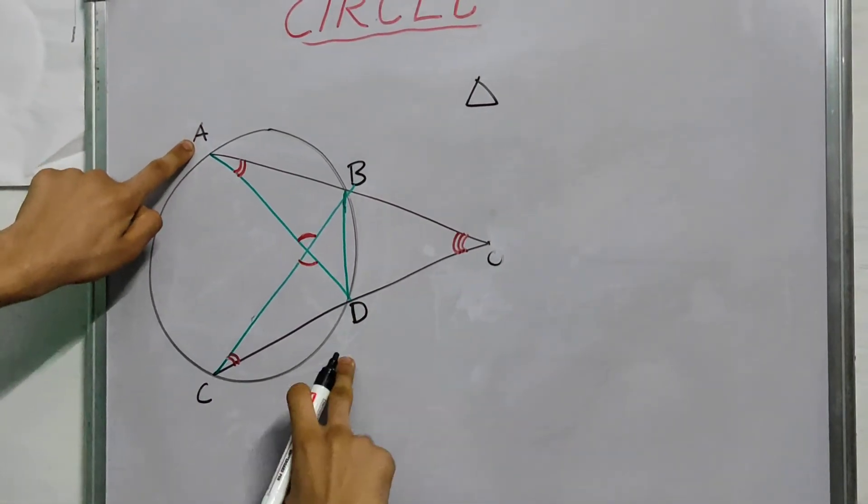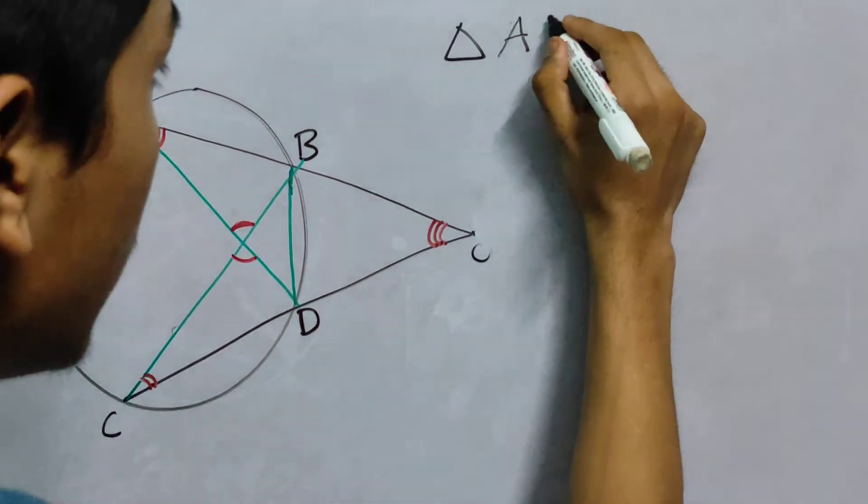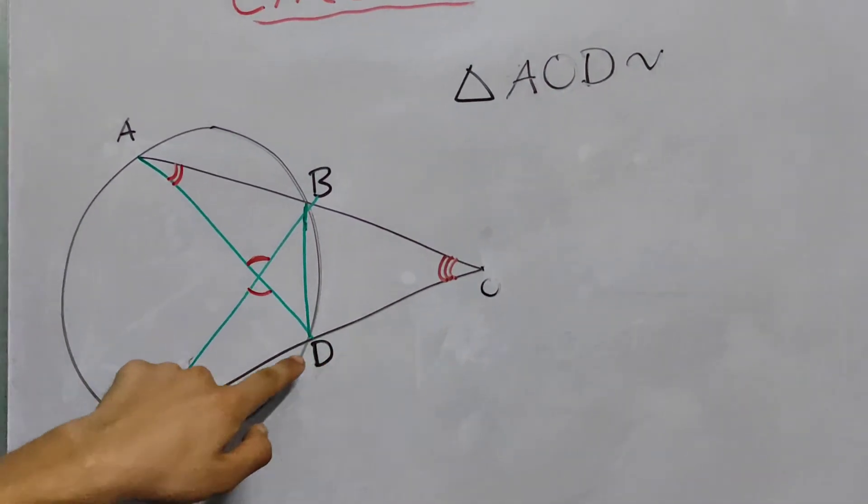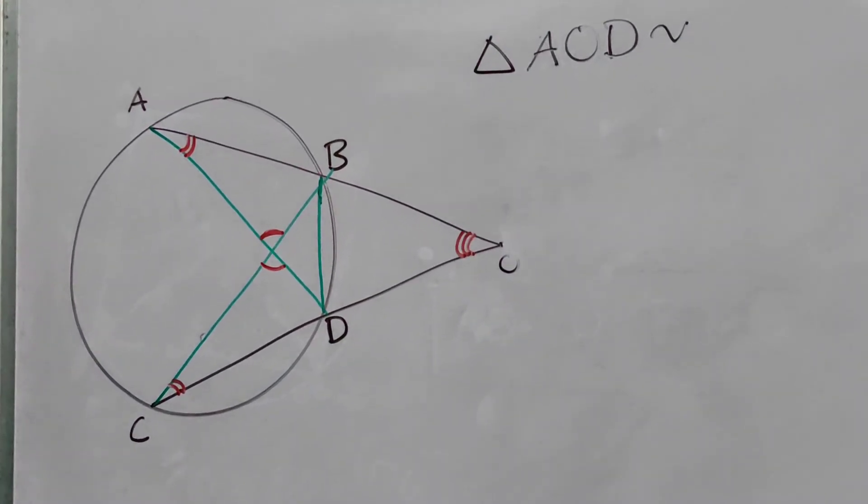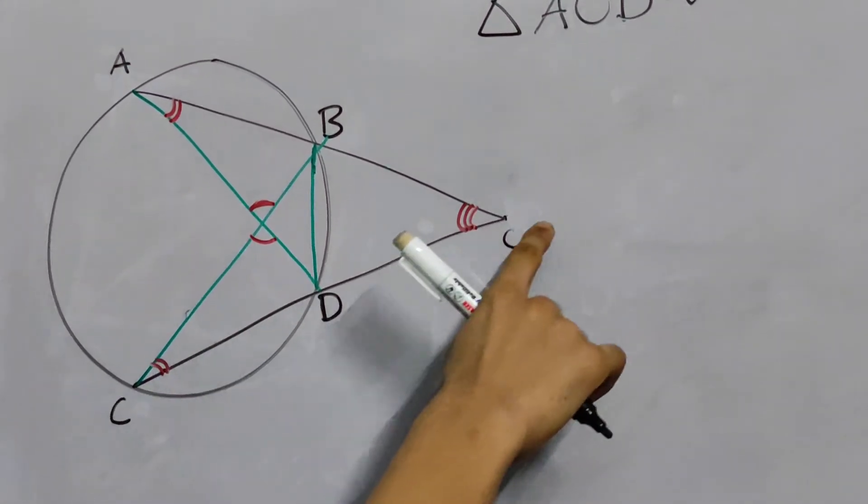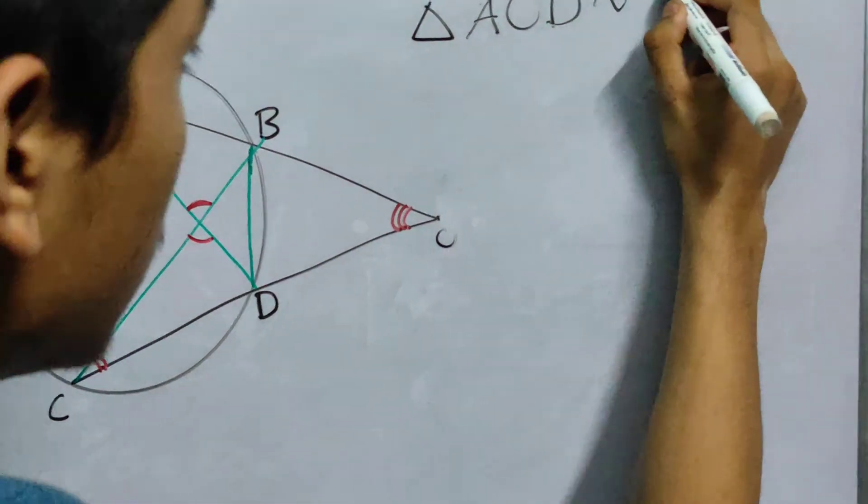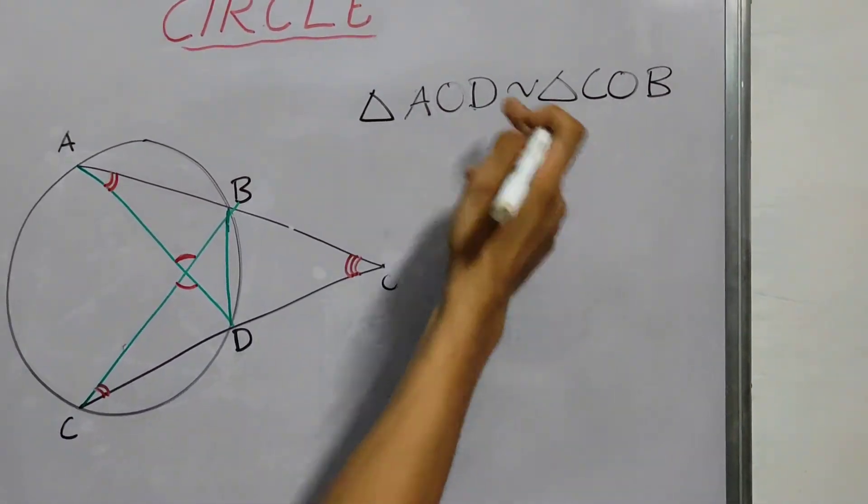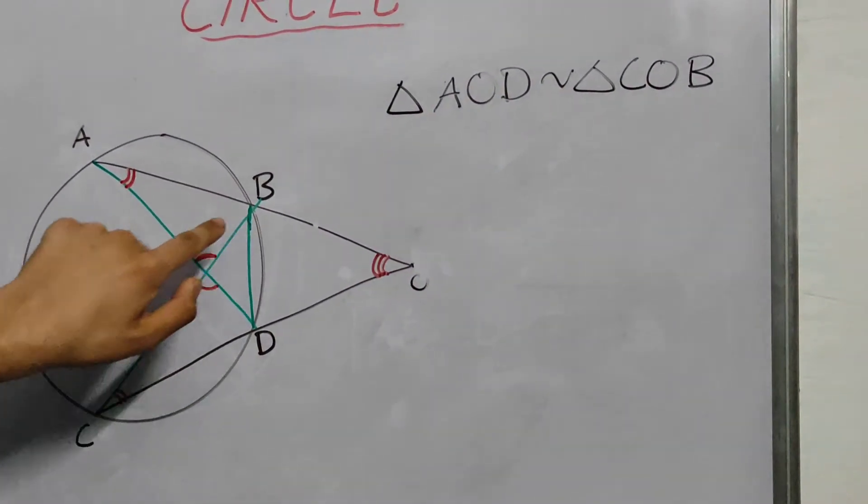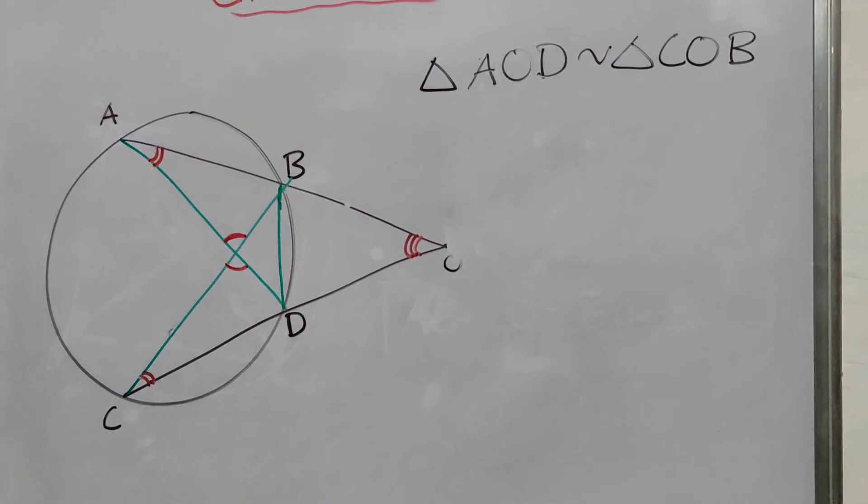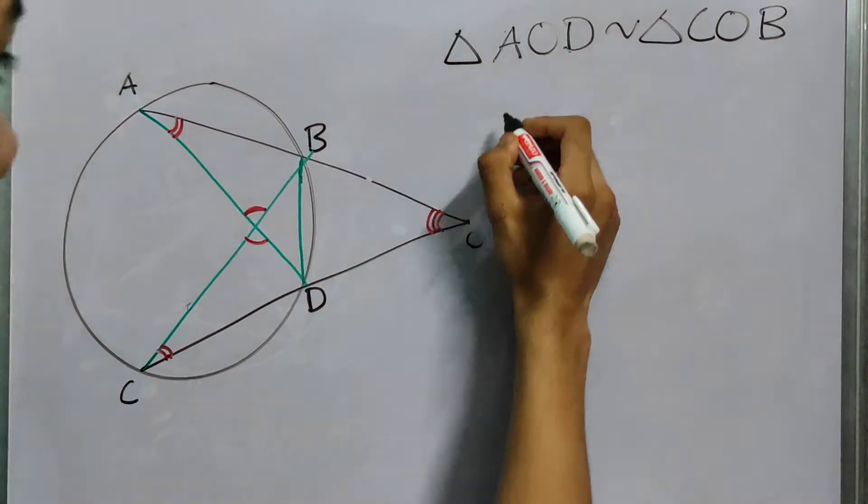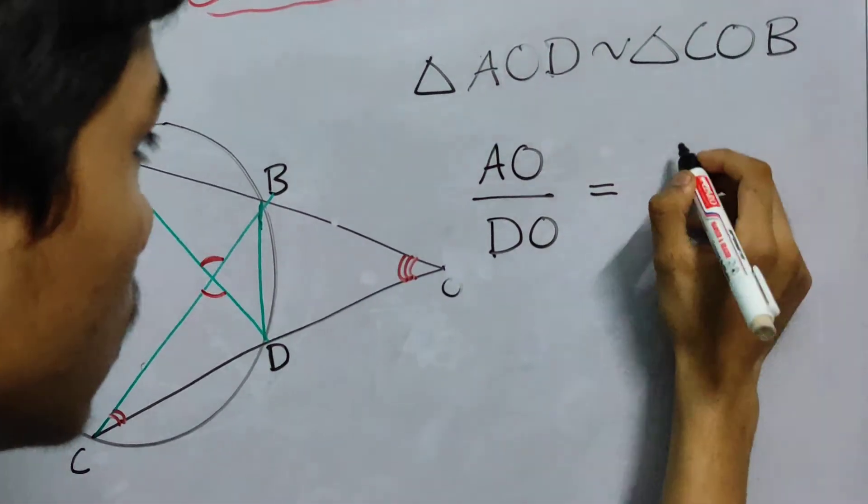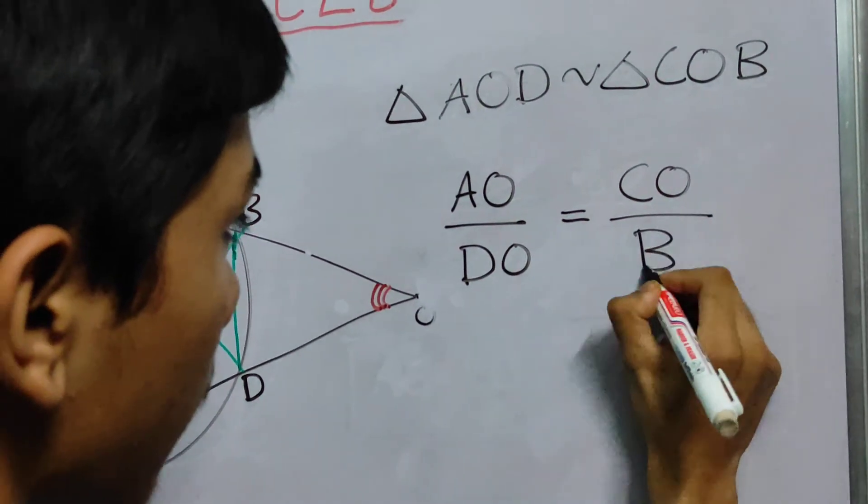A, O, D. Triangle AOD will be similar to triangle COB. Angle A is equal to angle C, and angle O is common. Also these two angles will also be equal, it follows. And we are going to do the same thing again, AO divided by DO is equal to CO divided by BO.